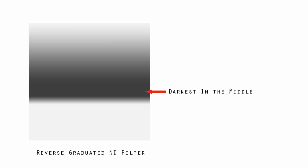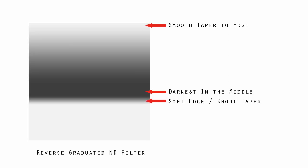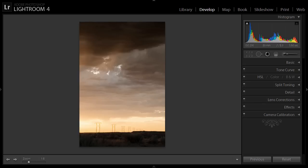A split reverse neutral density filter does the opposite. It's darkest in the center of the frame somewhere, and then it gradually gets lighter as it nears one edge, and it has a soft edge on the opposite side. These are mostly used when photographing landscapes with wide-angle lenses when the sun is on the horizon.